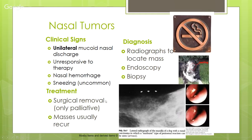With nasal tumors we typically see a unilateral mucoid nasal discharge that's unresponsive to antibiotics or antifungals. There may be nasal hemorrhage or epistaxis and sometimes a sneezing reflex from nerve irritation. We can do x-rays to locate the mass, endoscopy — which can also reveal nasal mites as another cause of rhinitis — and biopsy. Surgery is typically only palliative; masses usually recur.